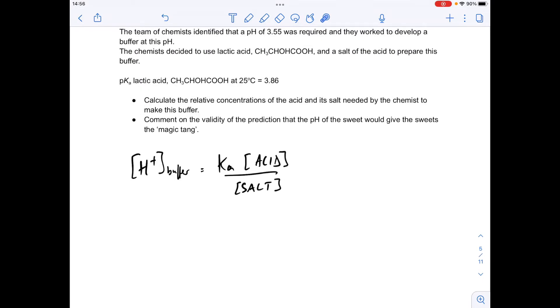So make a start, you'll see I've already written up the acid over salt expression, should be your starting point for any buffer calculation. So the H plus concentration of a buffer is equal to the Ka multiplied by the acid concentration divided by the salt concentration.